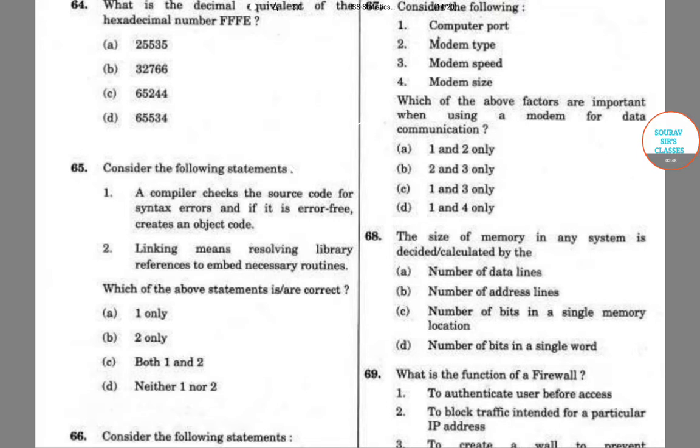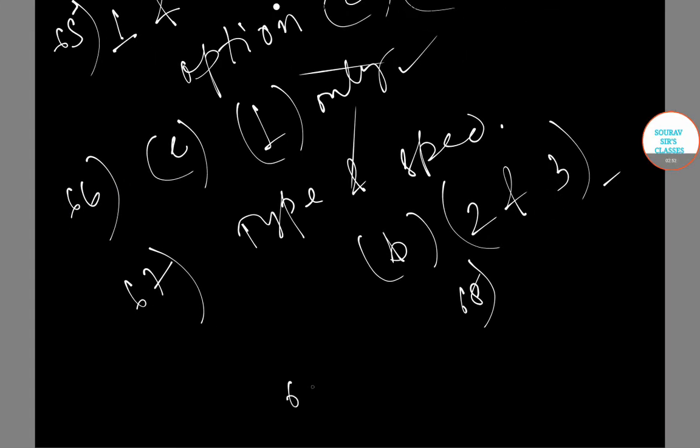So let's do the answer now. In question number 68 we can say that the size of memory body in any system is calculated by the number of address, number of address lines. So our correct option is option B.